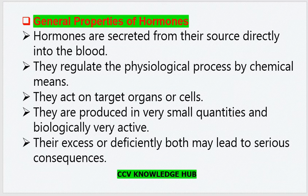Let's see the general properties of hormones. Hormones are secreted from their source directly into the blood. They regulate the physiological process by chemical means. They act on target organs or cells. They are produced in very small quantities and are biologically very active. Their excess or deficiency both lead to very serious consequences.